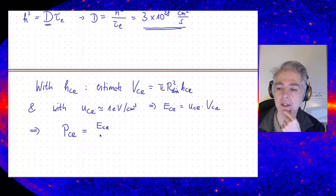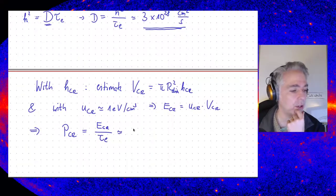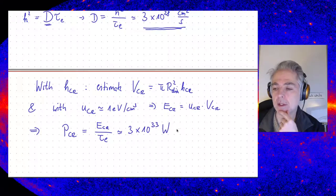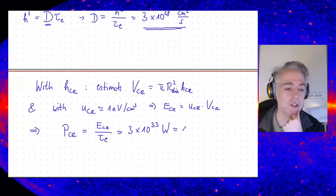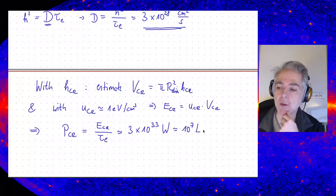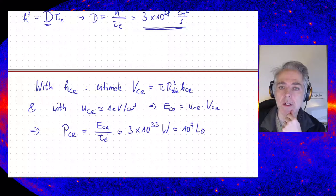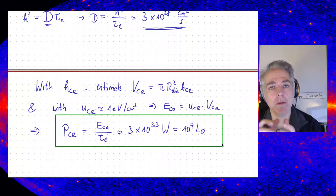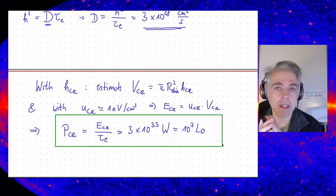With the escape time, we know the power required to produce cosmic rays that are escaping — we need to replenish them. The cosmic ray power is E_CR divided by tau_escape, and that turns out to be about 3 times 10 to the 33 watts, or about 10 to the 7 solar luminosities. That's the benchmark number we have to compare with whatever we find as a candidate accelerator.